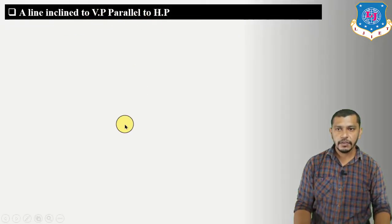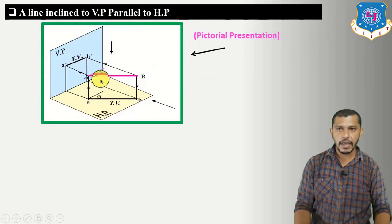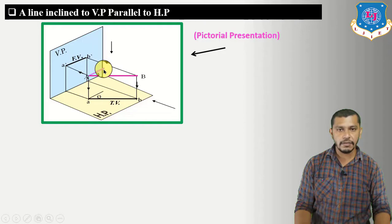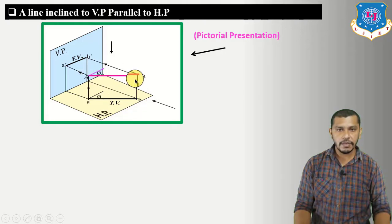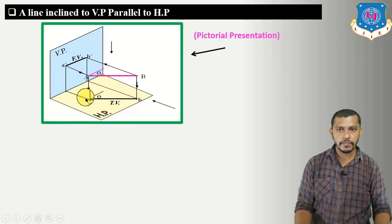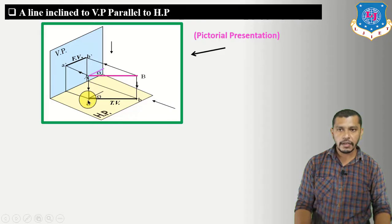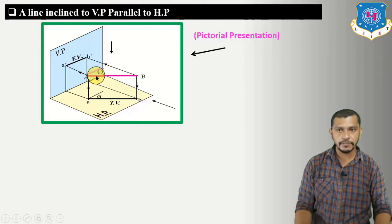Case 4 — a line inclined to VP, parallel to HP. Line AB is inclined to the vertical plane at angle phi — the angle of inclination with VP — and parallel to the horizontal plane. To draw the plan, we draw projection lines perpendicular to the horizontal plane from A and B. Connecting them gives the plan of line AB, which is inclined at angle phi to the XY reference line.